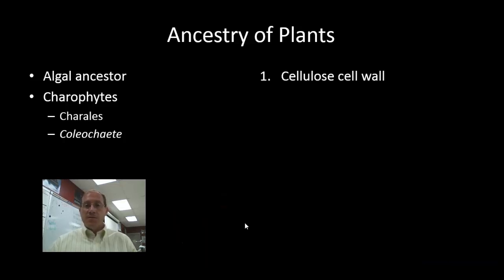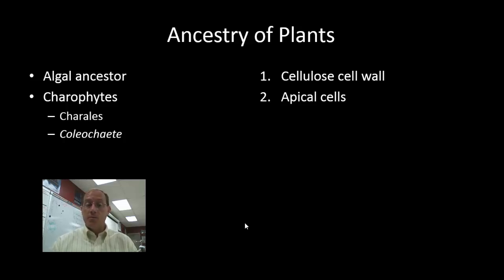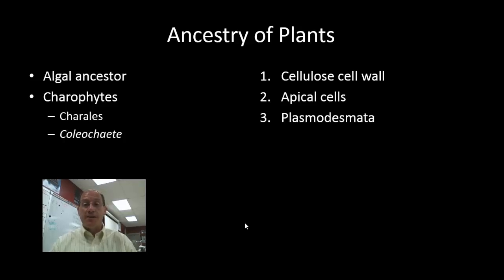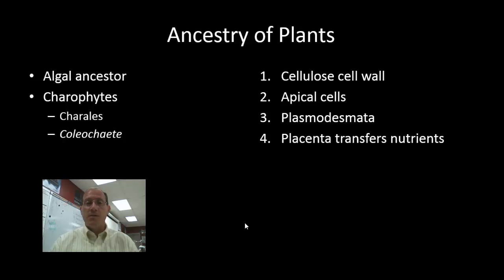Some features that would have promoted the evolution of a land plant include the cellulose cell wall. Another is apical cells, meaning cells that are able to increase in length — we see this in some charophytes and in the apical growth of current land plants. Another evolutionary feature is the plasmodesmata, which is essentially a pathway for cells to communicate and transfer nutrients to one another. This nutrient transfer is also something we find in the placenta, kind of like an animal nursing its young, where nutrition is passed from one generation to the next.